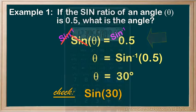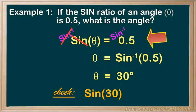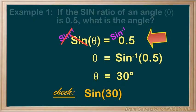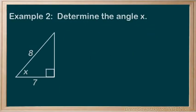That sine of Theta, in this case 30, gives us the ratio of 0.5. Example 2: Determine the X in this triangle.